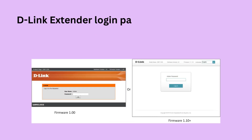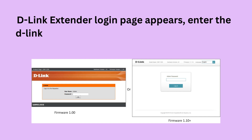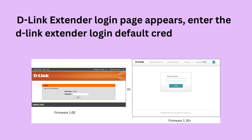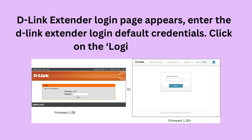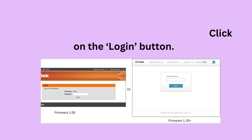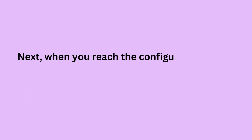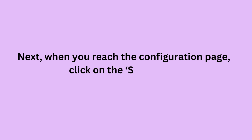The D-Link extender login page appears. Enter the D-Link extender login default credentials and click on the login button. Next, when you reach the configuration page, click on the Setup tab.